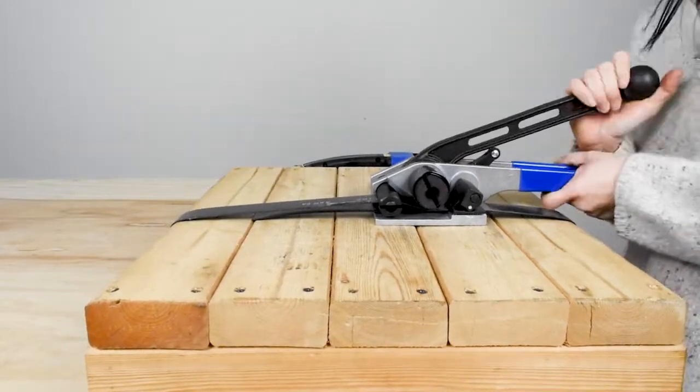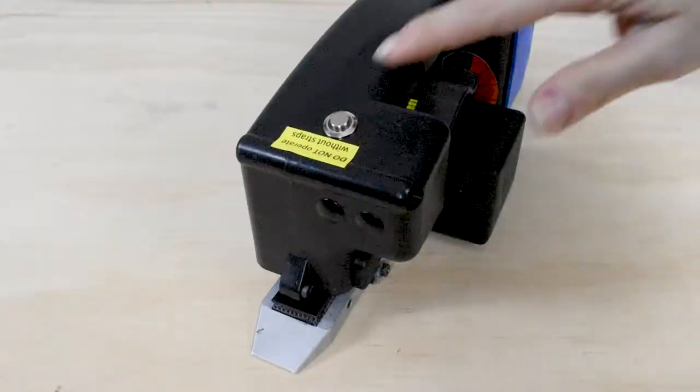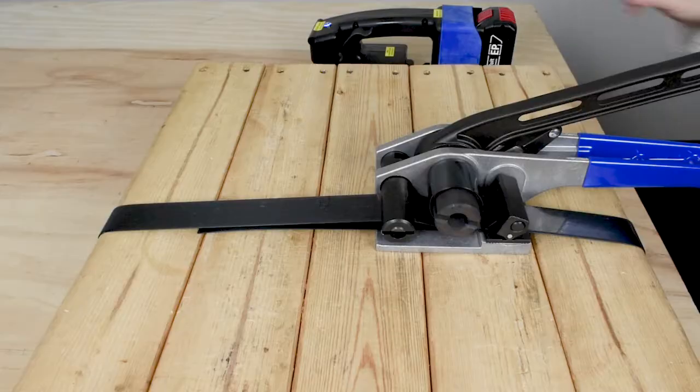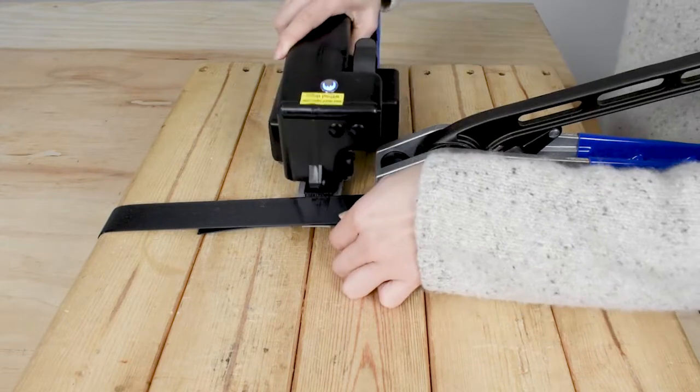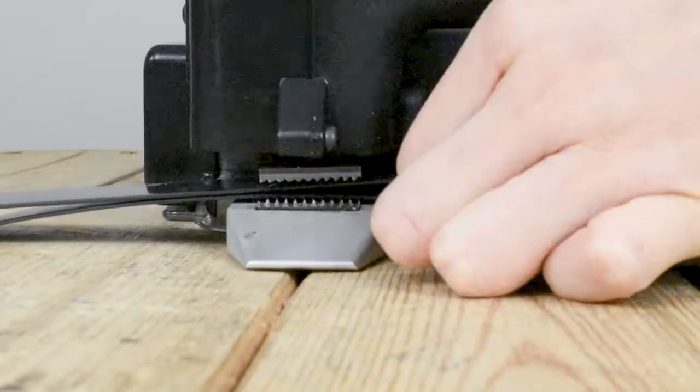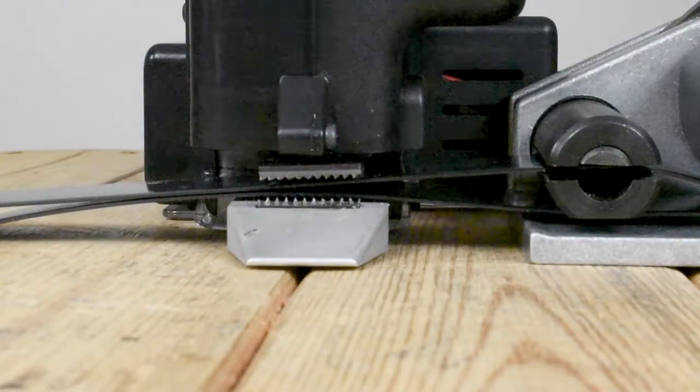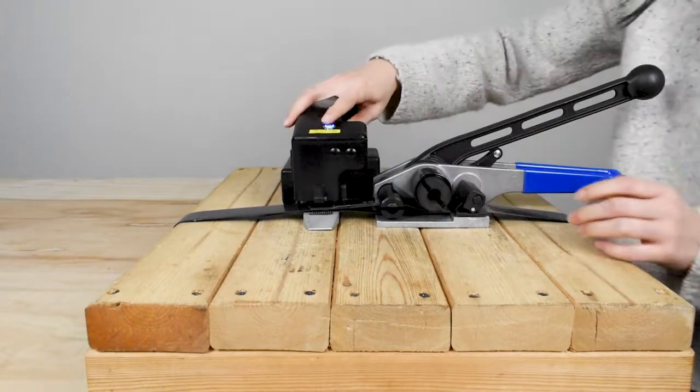Once your load is tensioned, adjust the time setting and push the tap button once. Align the EP1270 perpendicular to the tensioner making sure both pieces of the strap are between the sealing pads. Push down the handle and press the tap button to seal.